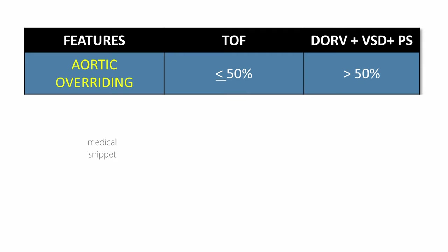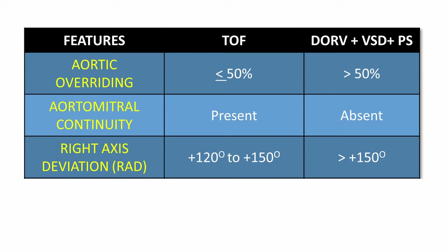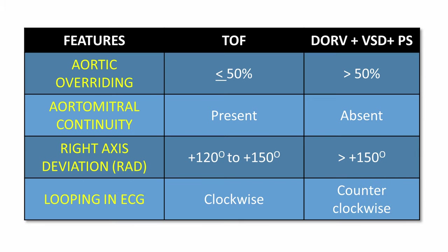Let us discuss the difference between TOF and double outlet right ventricle (DORV) with VSD and pulmonary stenosis. The overriding of the aorta in TOF is not more than 50 percent. If it is more than that, DORV morphology is to be considered, and in DORV there is also loss of aorto-mitral continuity. In DORV, the right axis deviation is more than 150 degrees and there is counter-clockwise looping on ECG, whereas in TOF there is clockwise looping.